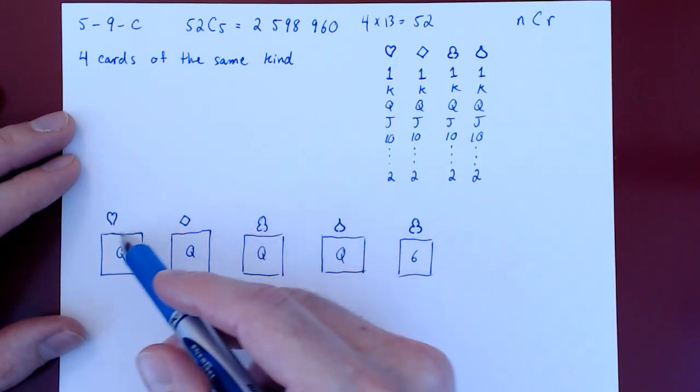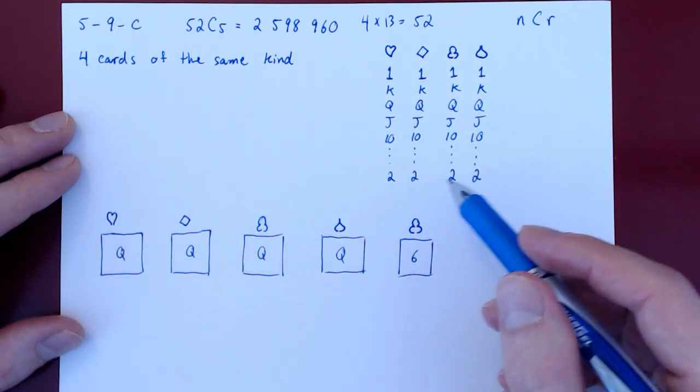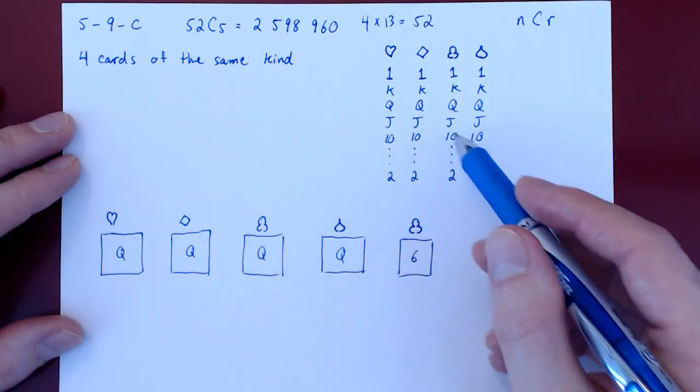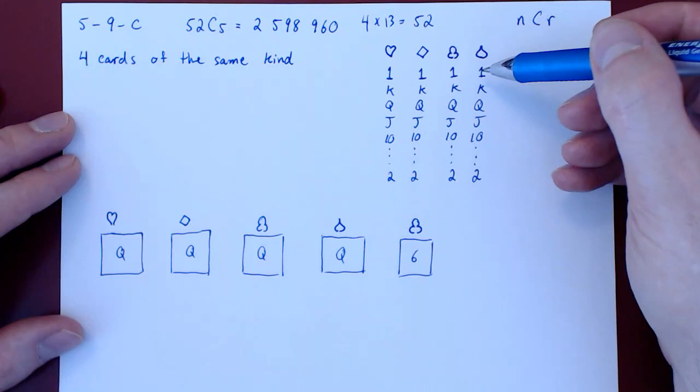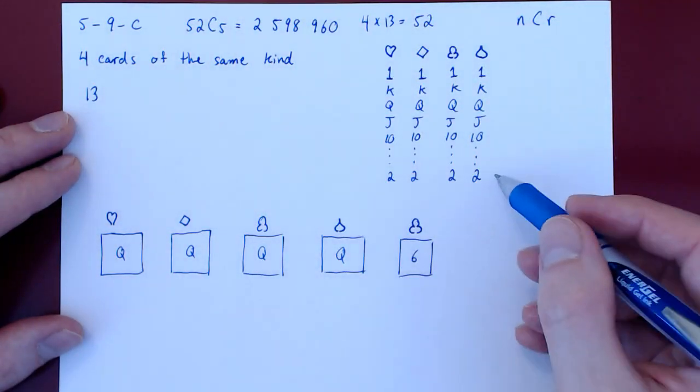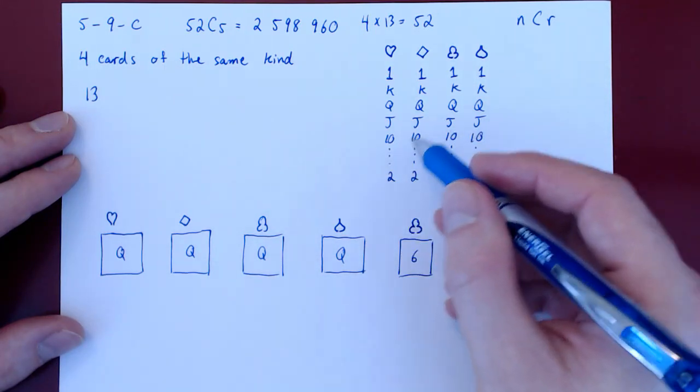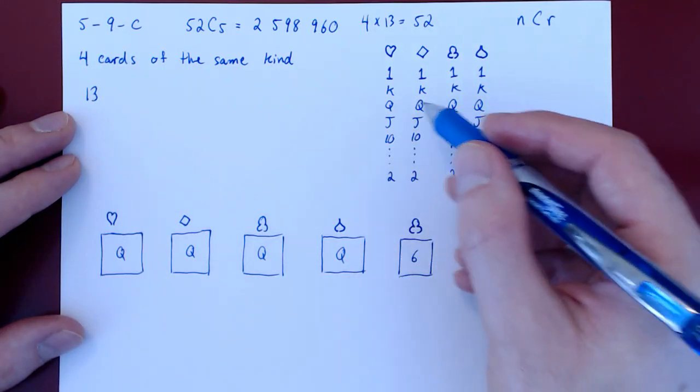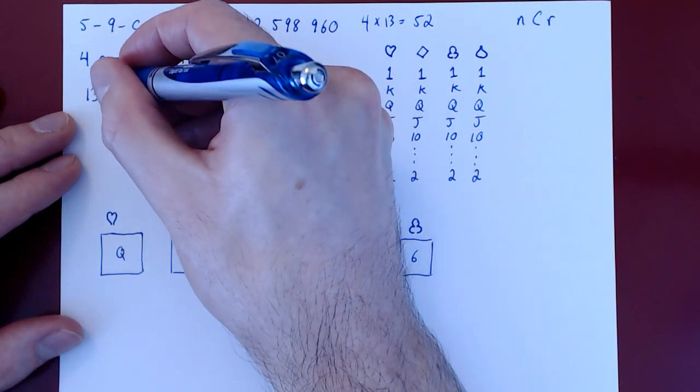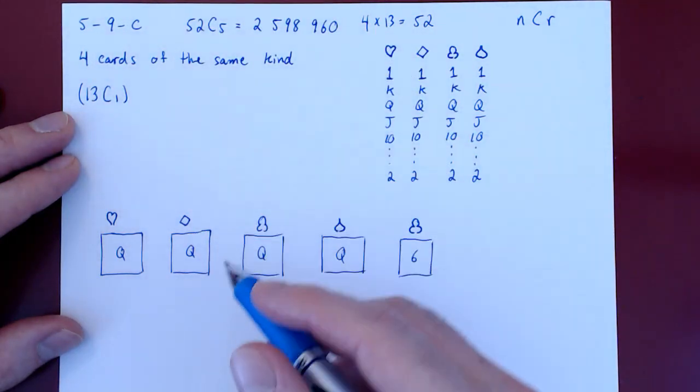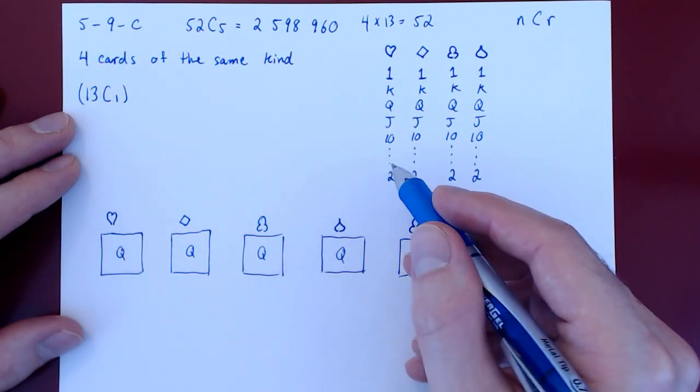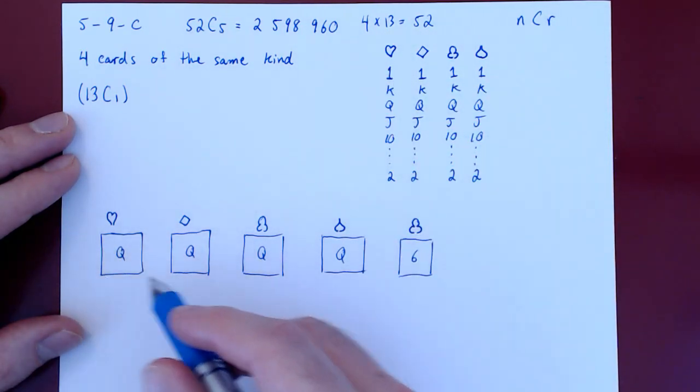So how many possible quadruples are there? Well, as we've said, this comes down to choosing the kind. We have a quadruple of 2s, or 3s, or 4s, up to aces. There are 13 different kinds to choose from. And out of the 13 different kinds, we're choosing one such kind. So 13 choose 1. Now we've chosen the kind, so we have a quadruple of 2s, or 3s, or 4s, up to aces. In that case, queens.